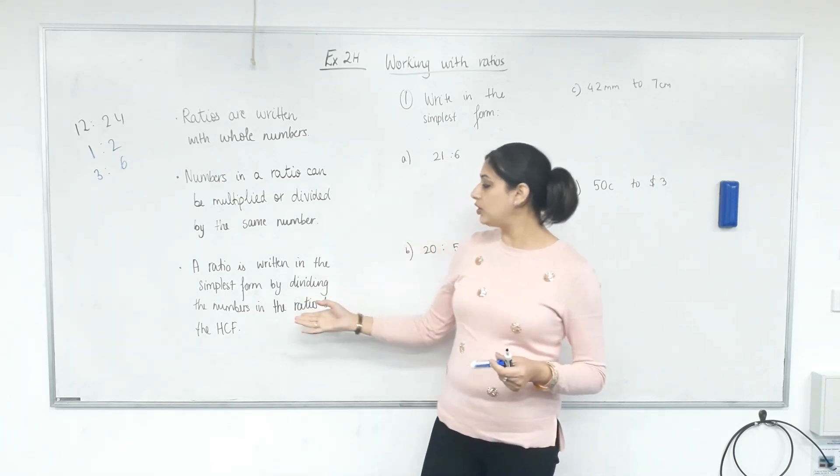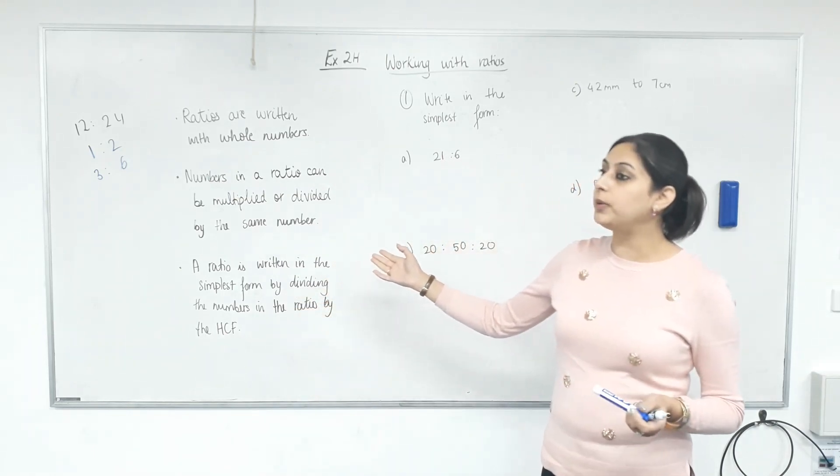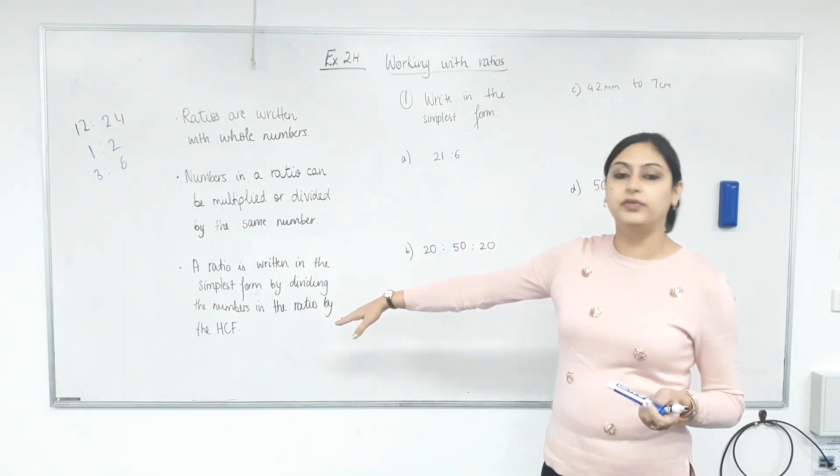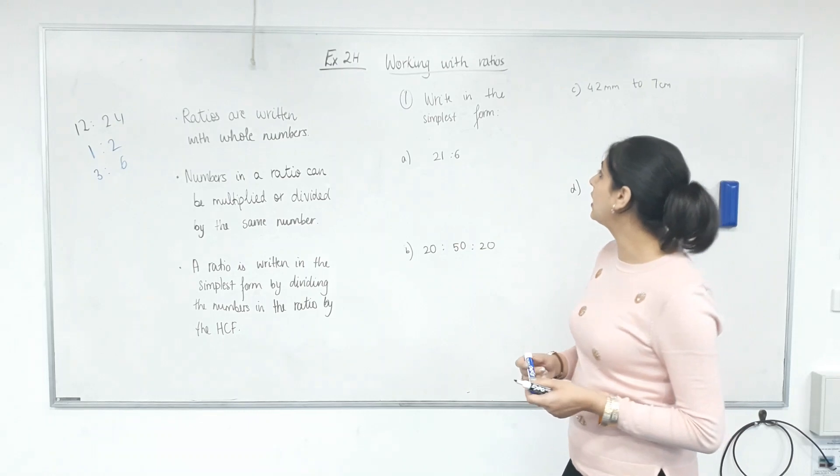So how we simplify ratios? Just like we simplify a fraction. Divide both top and bottom by the same number. By the highest common factor. Is that clear? Let's get started.